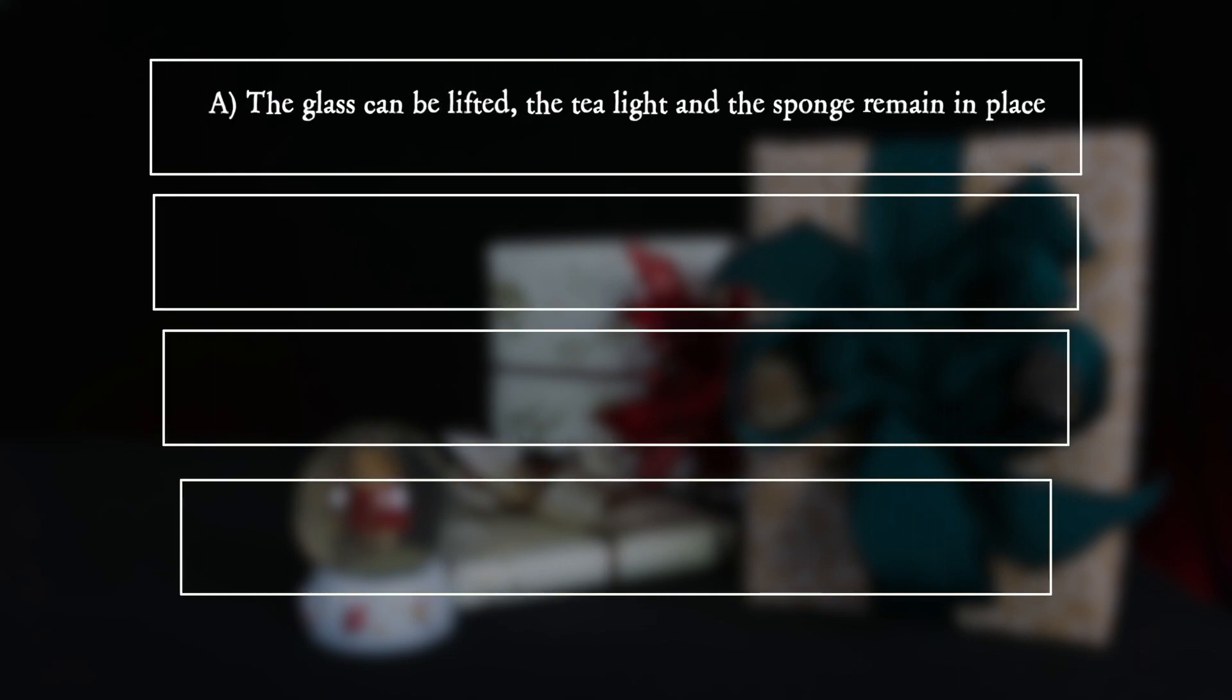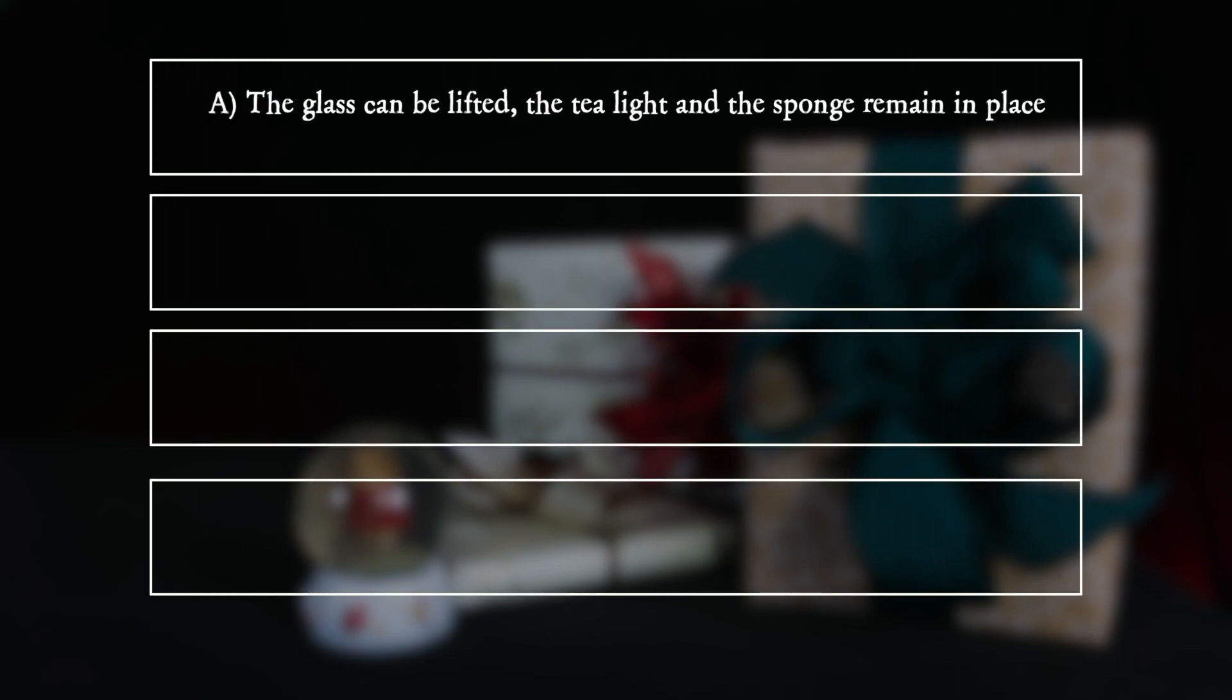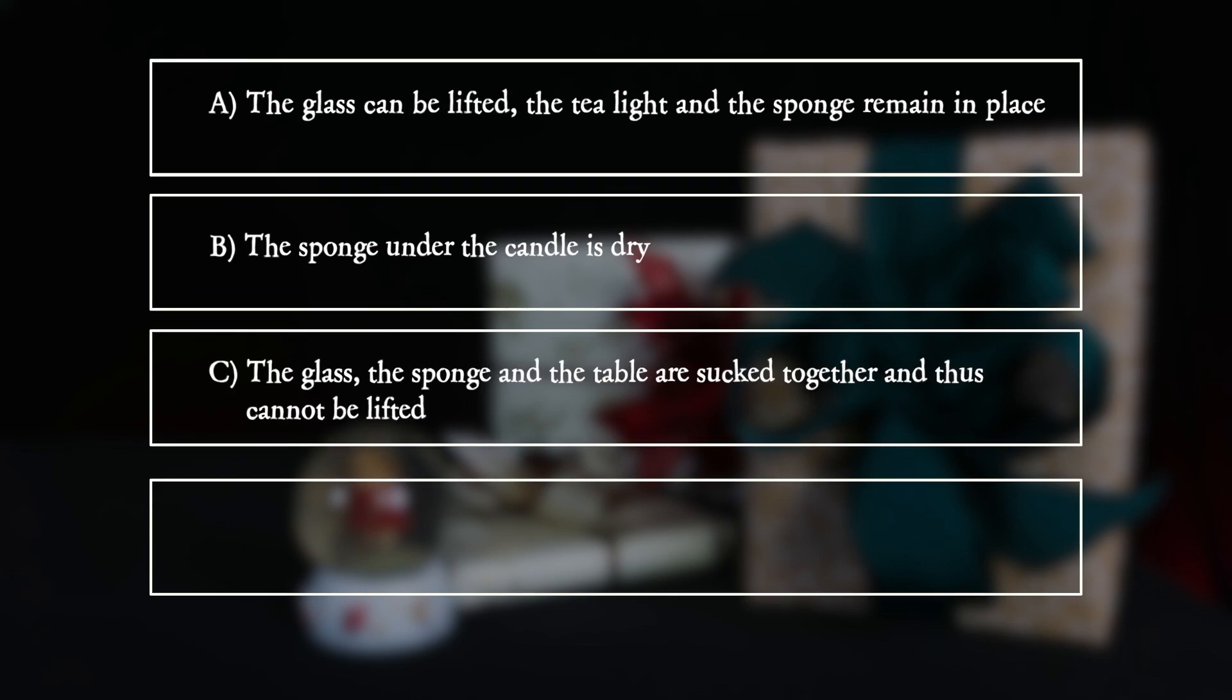A. The glass can be lifted, the tea light and the sponge remain in place. B. The sponge under the candle is dry. C. The glass, the sponge, and the table are sucked together and thus cannot be lifted. D. The sponge remains stuck to the glass and is lifted up with it.